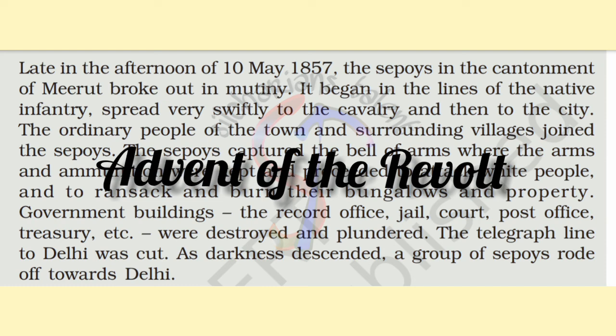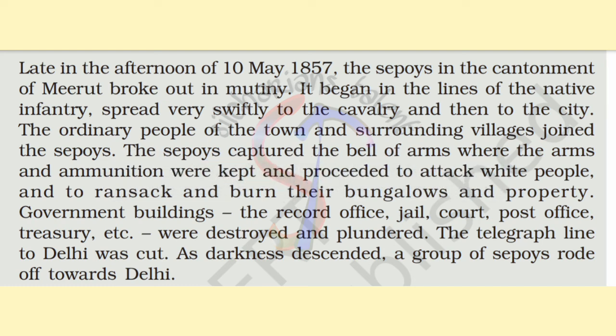Let us begin with the advent of the revolt. On the 10th of May 1857, the sepoys in the cantonment of Meerut broke out in mutiny. It started with the native infantry, cavalry, and then spread to the city. The sepoys captured the Bells of Arms — a storeroom in which weapons and ammunition were kept.